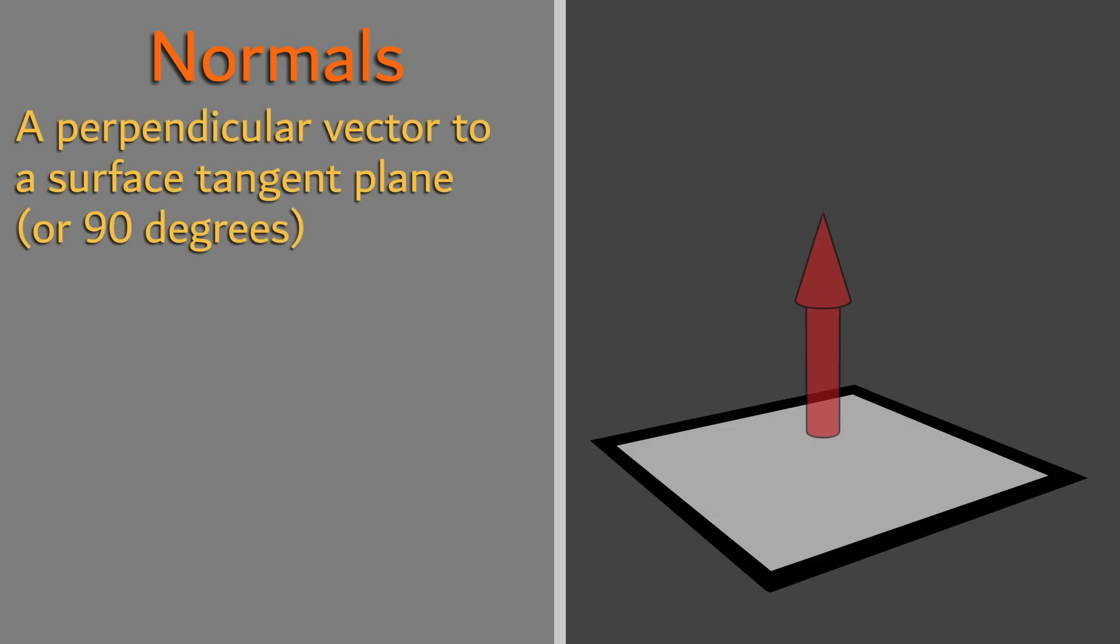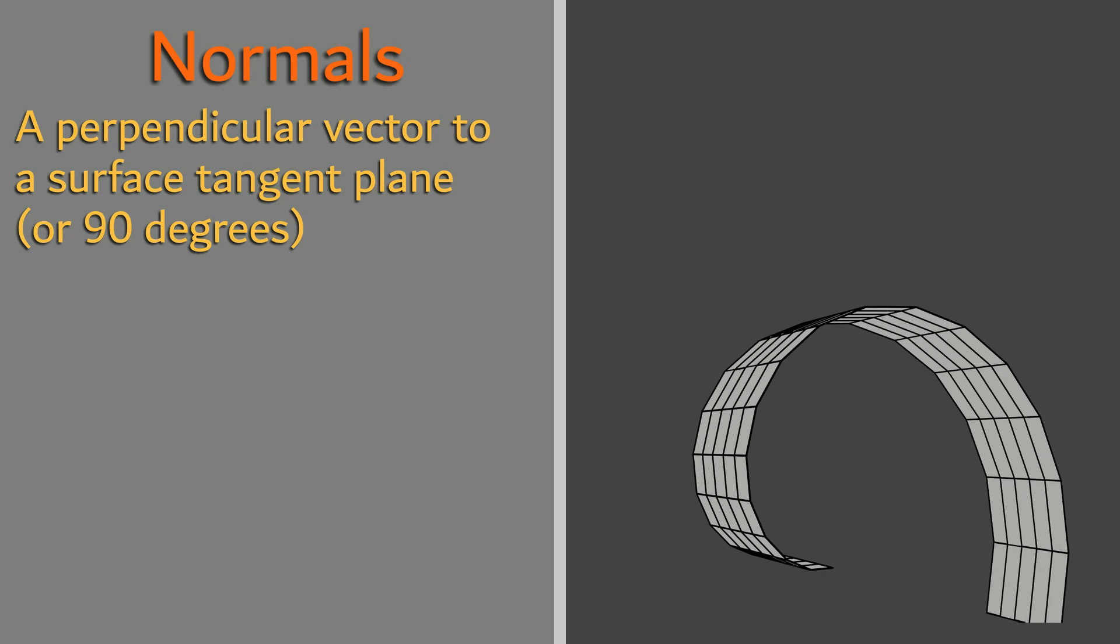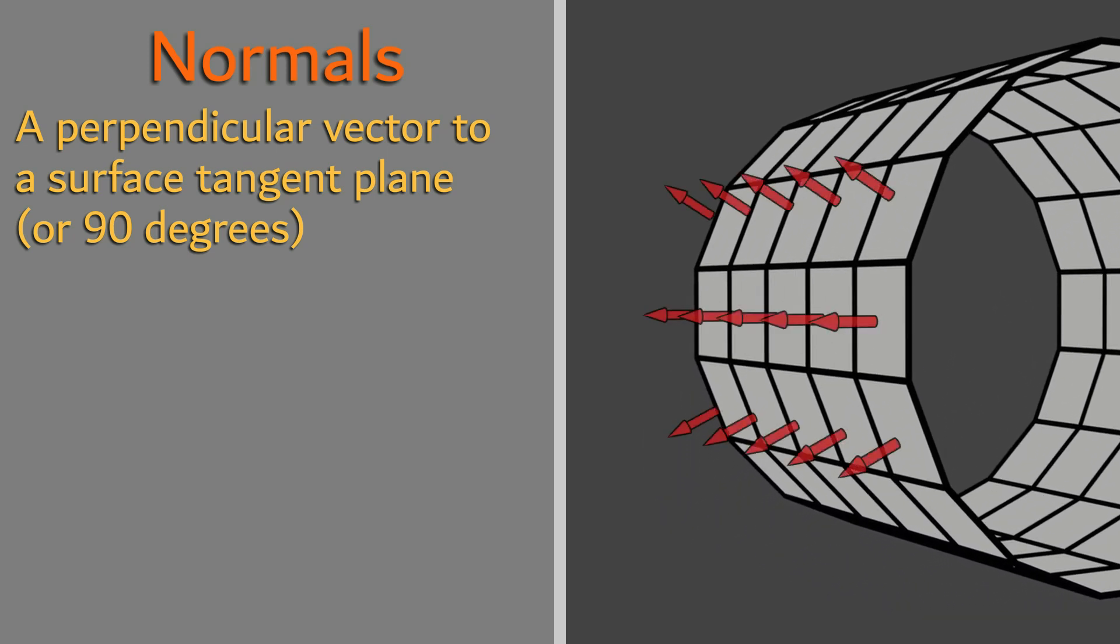Before we look at light, it is important to have a rough understanding about surface normals, or that they even exist. The normal of a surface is a vector that is perpendicular to the tangent plane of a surface. In short, if we are able to visualize each surface as a flat plane, our surface normal will be a straight line exactly 90 degrees, or perpendicular, to the center of that plane.